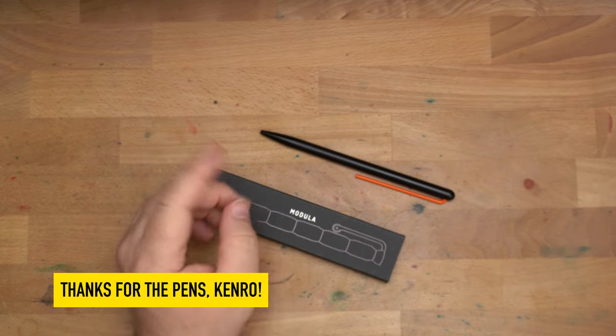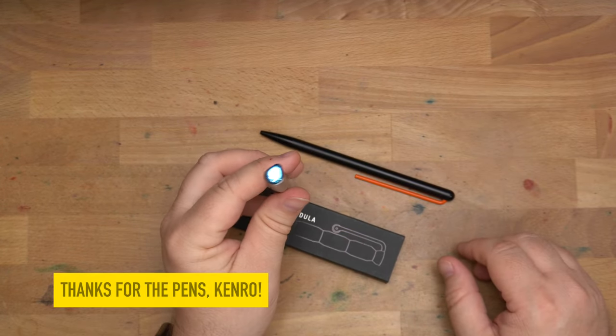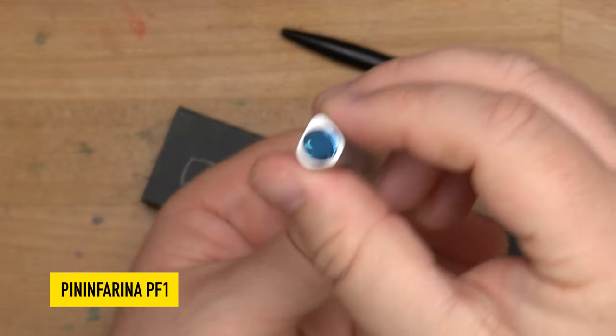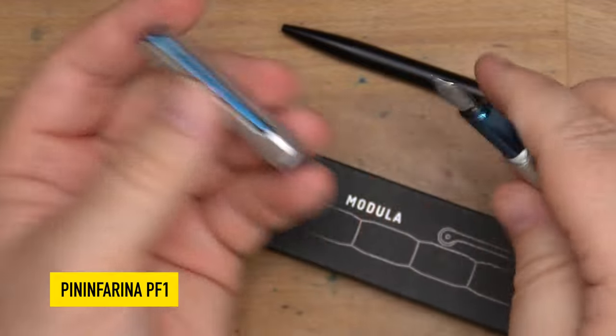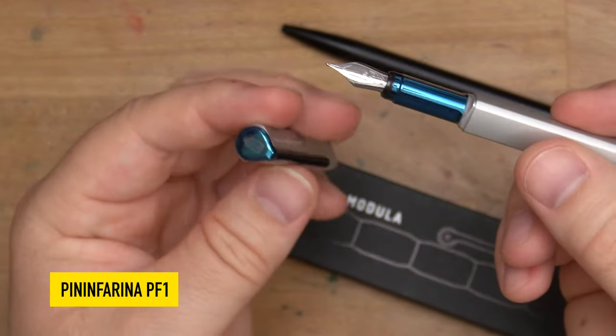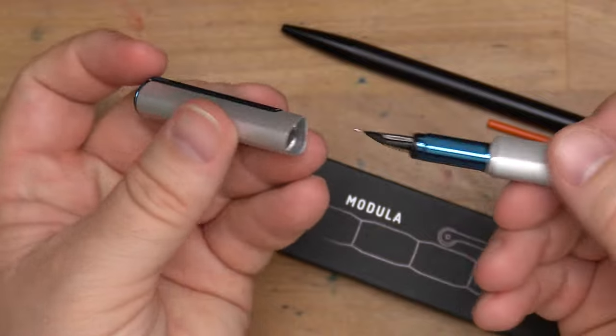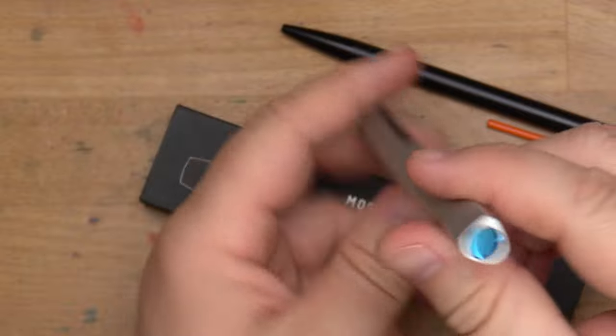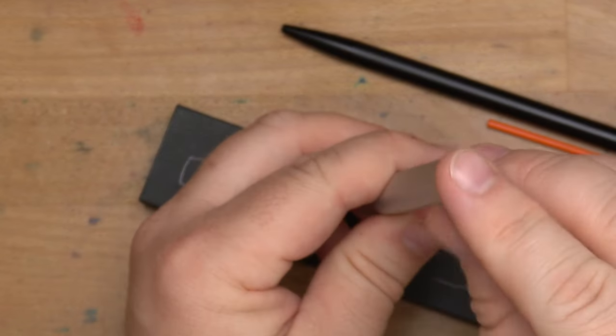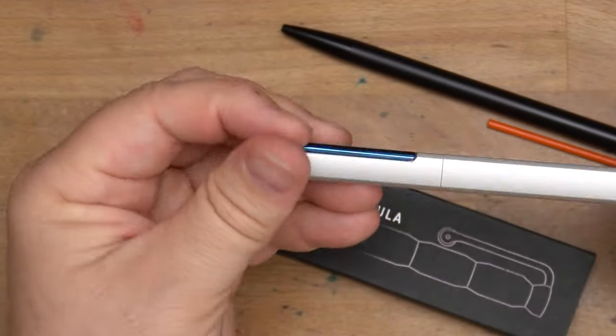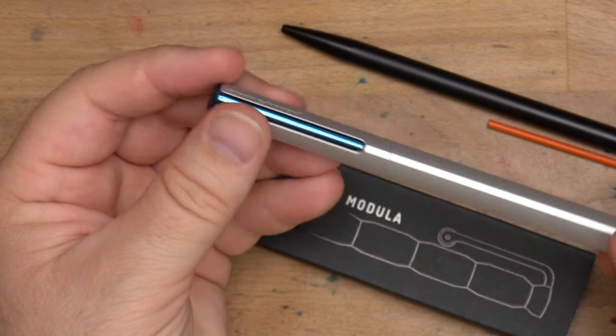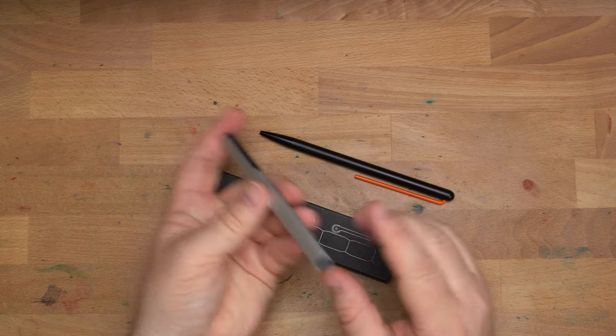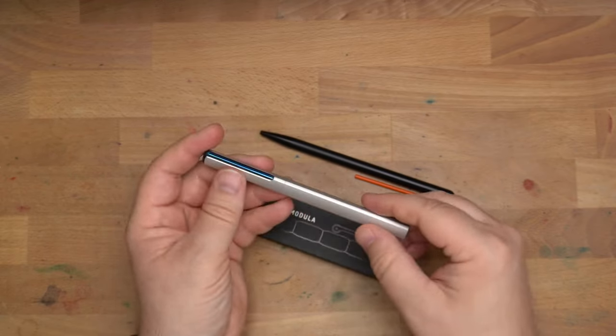You've seen some Pininfarina on my channel before, and that's this one, the PF1. I also have the PF2, but it's not handy at the moment. This is a really interesting design for a pen. It's got a snap cap with this striking blue interior. It's a really nice fountain pen, and great design, which should be expected from Pininfarina, a venerable Italian design firm that was founded in 1930 by Batista Pininfarina. They've done work with Ferrari and all kinds of stuff like that, and also make some really cool pens.